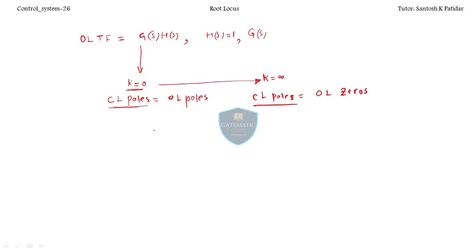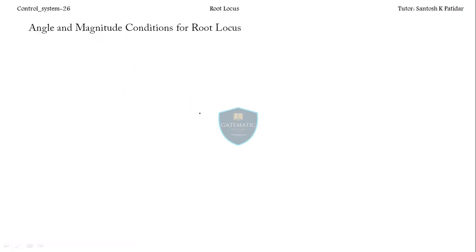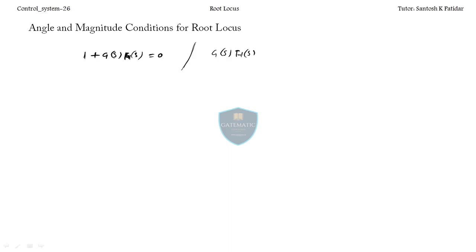Today we start with the angle and magnitude condition for the root locus. In root locus we are discussing the closed loop system. The characteristic equation is 1 + G(s)H(s) = 0. Though we consider the open loop transfer function G(s)H(s), indirectly we are studying the closed loop stability.